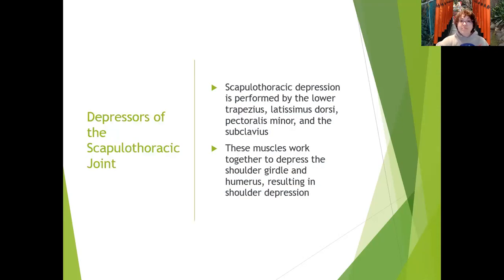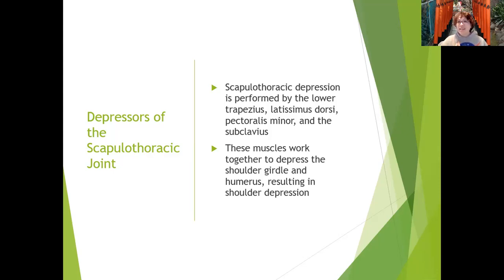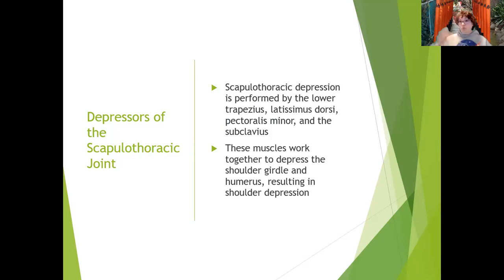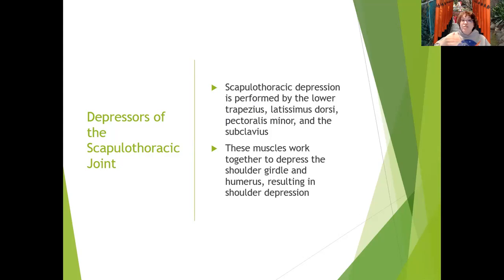I want you to be able to describe the reversal of muscle function in the latissimus dorsi that is involved in crutch walking. The scapulothoracic depressors — the primary ones — are the lower trapezius, the latissimus dorsi, the pectoralis minor, and the subclavius. The subclavius doesn't even attach to the scapula directly; it does so by way of the acromioclavicular joint. The latissimus dorsi also doesn't attach to the scapula, but does it by way of the glenohumeral joint. These muscles work in scapular depression even though they don't directly attach to the scapula.